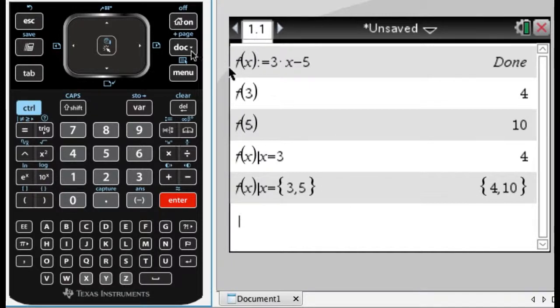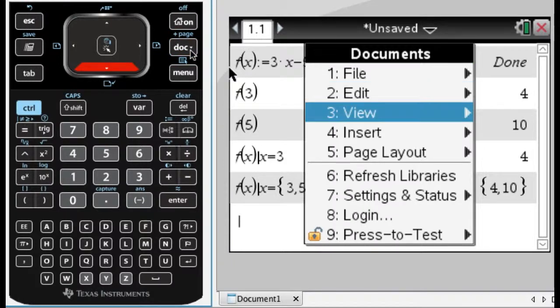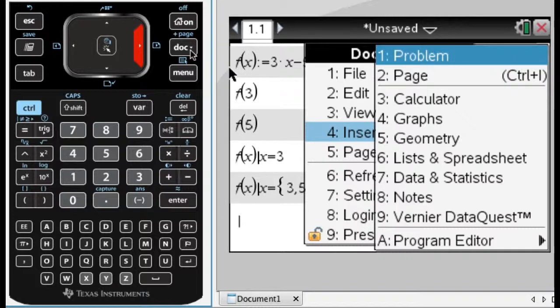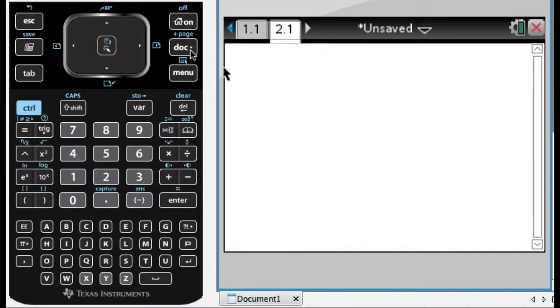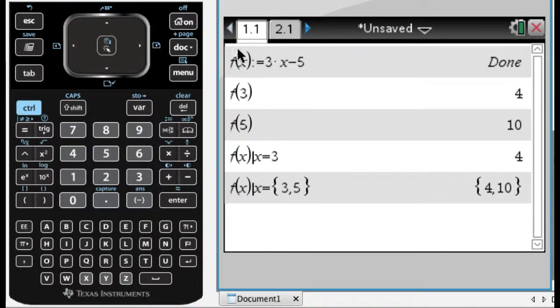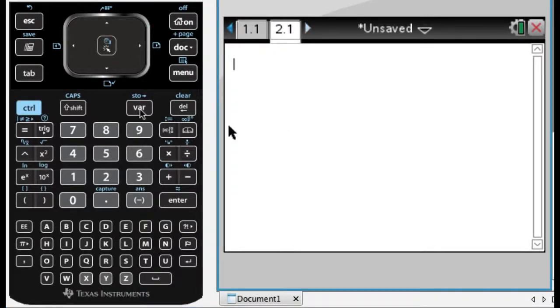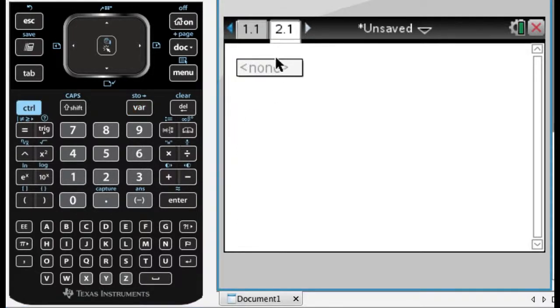So that's a couple things you can do. What I'm going to do now is I'm going to define another function. But I want to do it in a way that doesn't get in the way of what I just did. So I'm going to press the dot key and go to insert. And I'm going to insert a problem. So if I insert a problem and then calculator page again. You can see at the top here I have 1.1 and 2.1. On your calculator you go back and forth, press control to the left it takes you to 1.1. Control and to the right it will take you to 2.1. If I press the var key here you can see there's nothing because I'm doing a new problem now. So all the things that were defined in the previous problem don't apply.